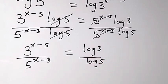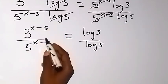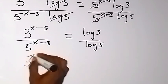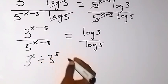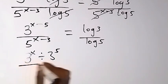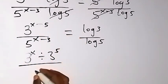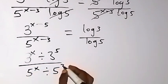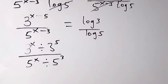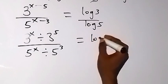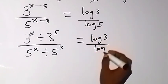So this is what we have. We can rewrite this and separate it — since we have subtraction in the exponents, we can separate using the law of indices to give division. That is 3 raised to the power x, divided by 3 raised to the power 5, all over 5 raised to the power x, divided by 5 raised to the power 3. This equals log 3 over log 5.